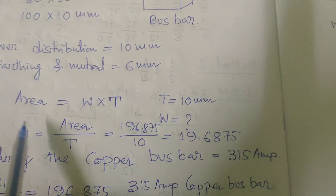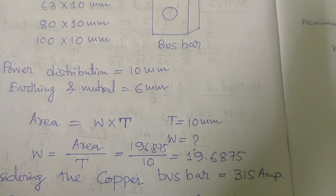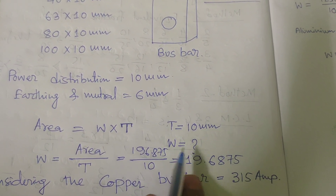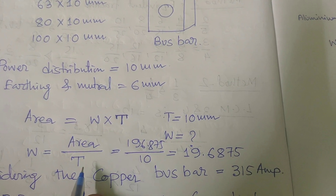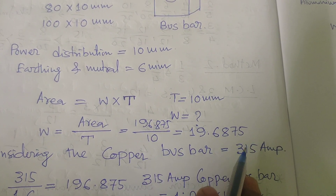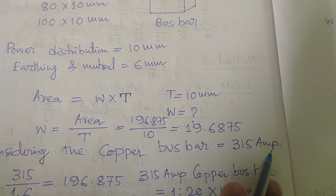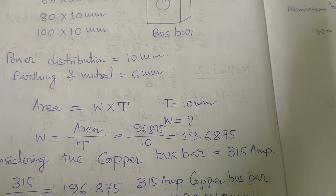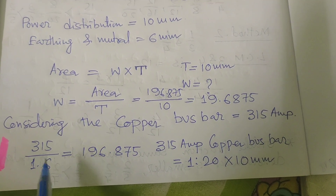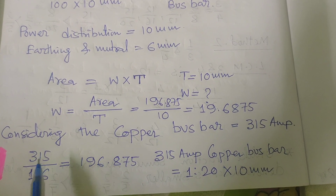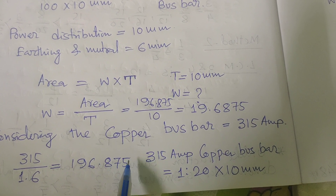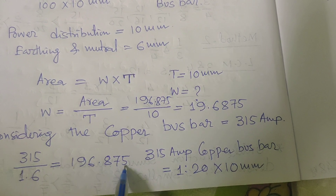Area equals width multiplied by thickness. So if the thickness is 10 mm, then width equals area divided by thickness. If we are considering a copper busbar of 315 ampere capacity: 315 divided by 1.6 (for copper) gives us 196.875 square mm.